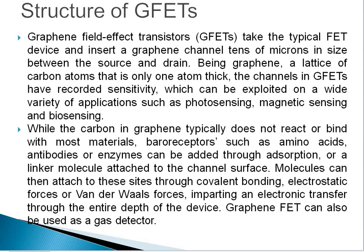Next is the structure of graphene field effect transistors. Graphene field effect transistors take the typical FET device and insert a graphene channel — 10 microns in size — between the source and the drain. Being graphene a lattice of carbon atoms only one atom thick, the channels in graphene field effect transistors have recorded high sensitivity, which can be exploited in a wide variety of applications such as photosensing, magnetic sensing, and biosensing. While the carbon in graphene typically does not react or bind with most materials, bioreceptors such as amino acids, antibodies, or enzymes can be added through adsorption or wrinkle molecules attached to the channel surface.